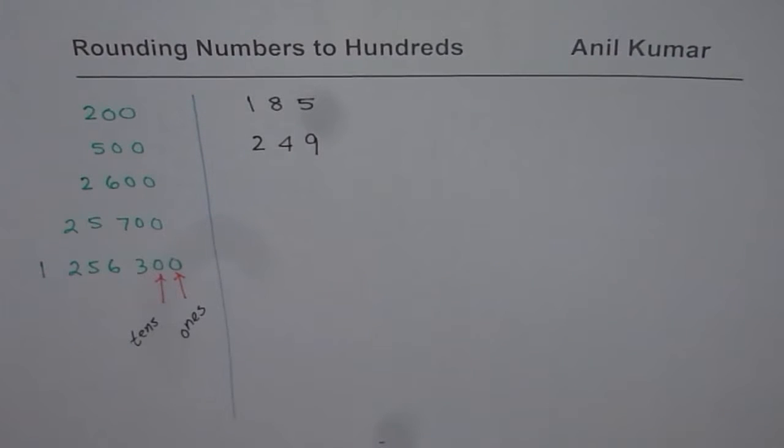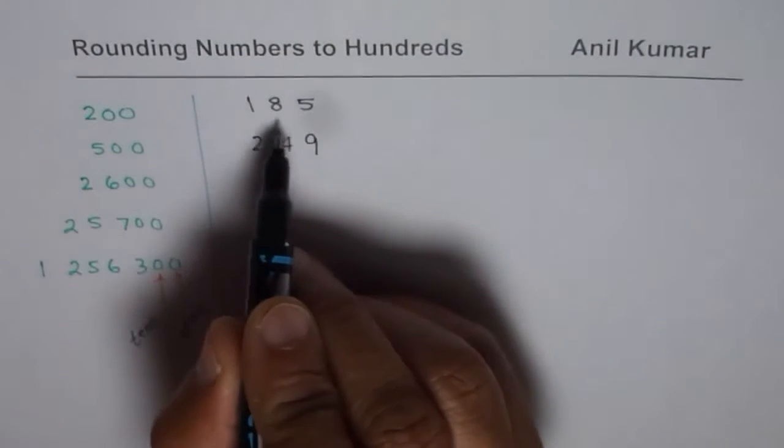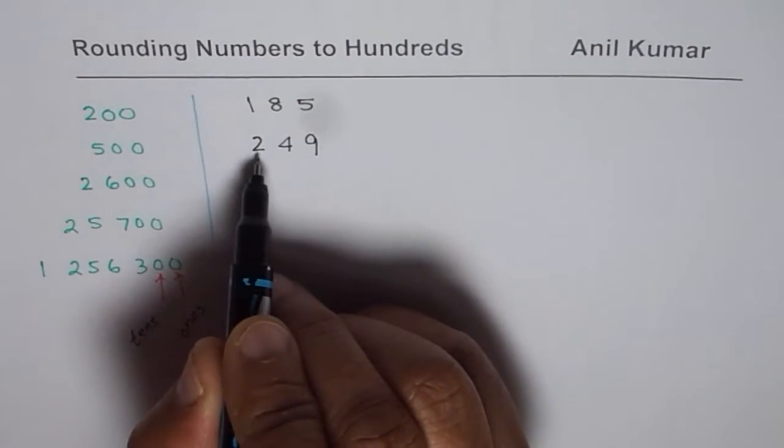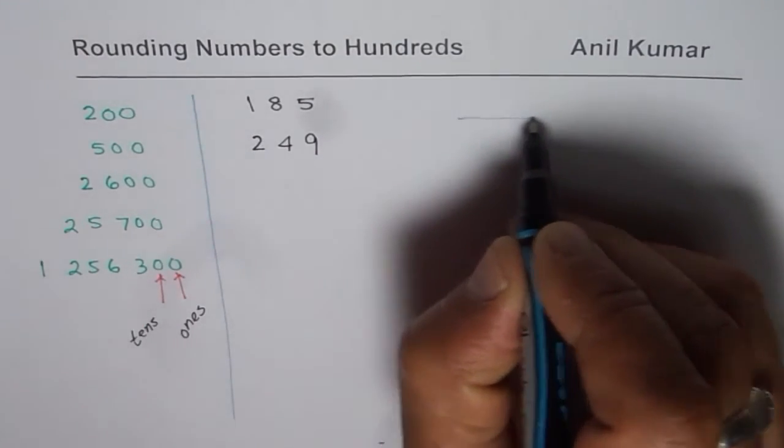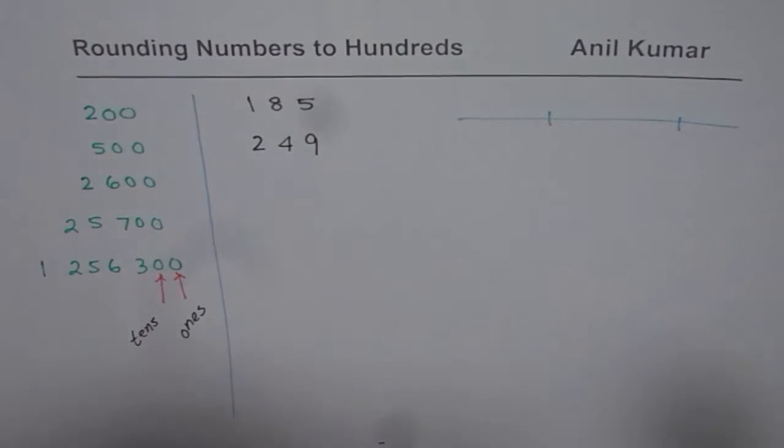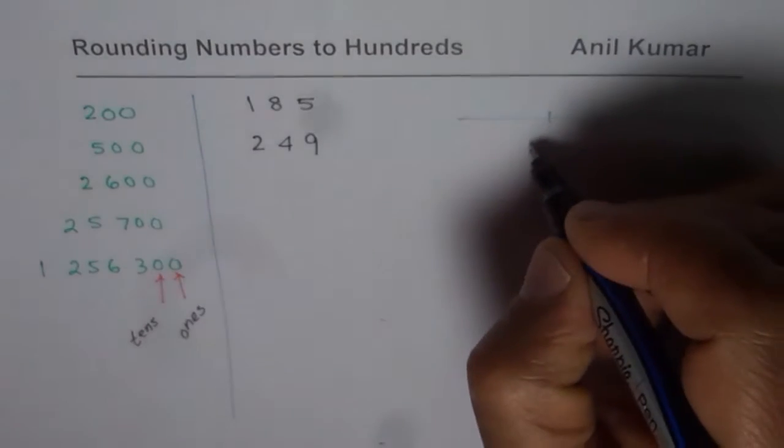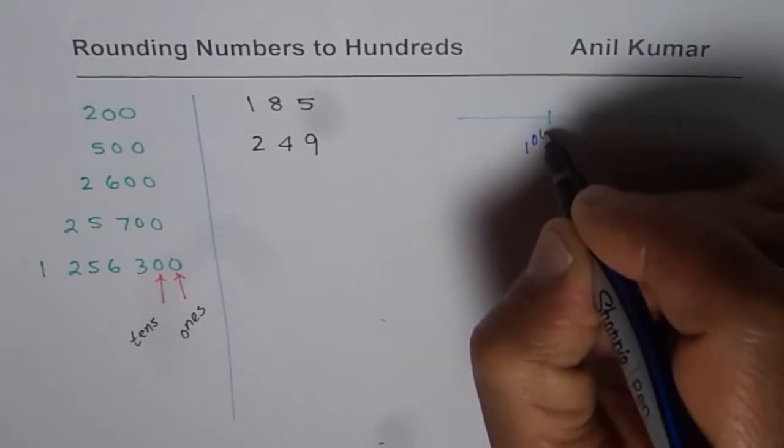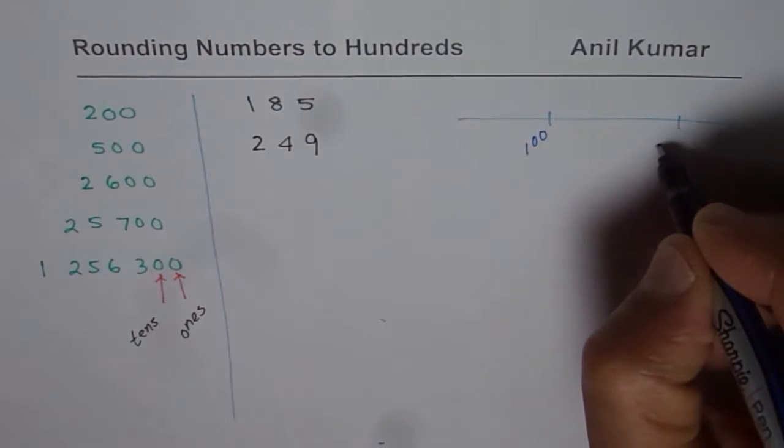Now when we say rounding to 200, that means what? We have two numbers here, 185 and 249. On a number line,